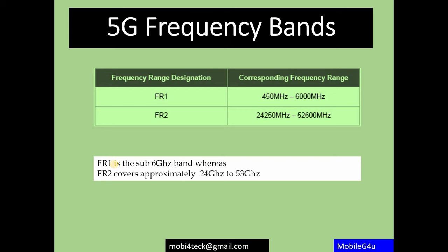Inside 5G NR, there are two modes: NSA (non-standalone) and SA (standalone), which come under eMBB and URLLC. Massive machine type communication and parts of URLLC also involve 5G and LTE together. This is how ITU-R sets the targets, and different organizations work together to achieve the magic triangle scenarios of eMBB, URLLC, and mMTC.